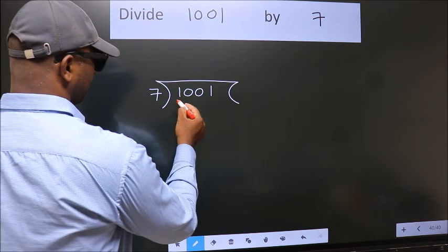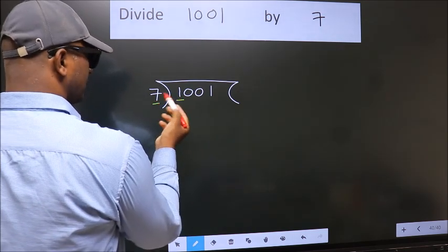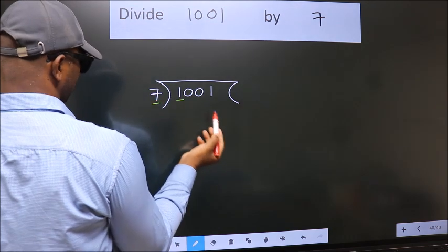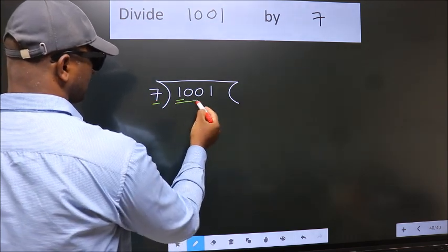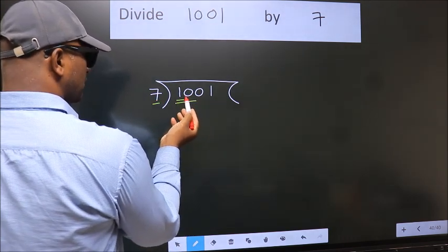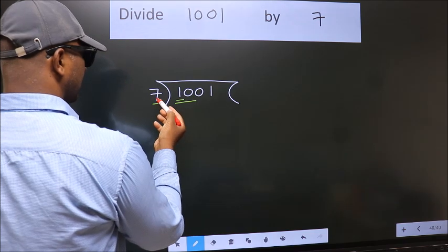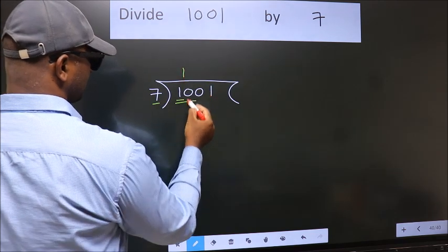Here we have 1, here 7. 1 is smaller than 7, so we should take 2 numbers: 10. A number close to 10 in the 7 table is 7 once, which is 7.